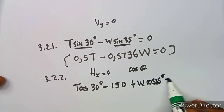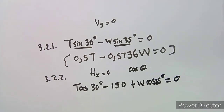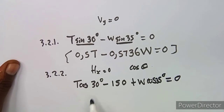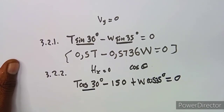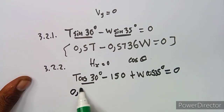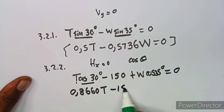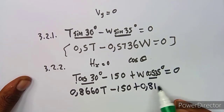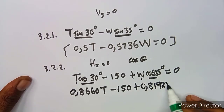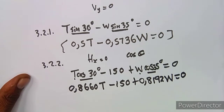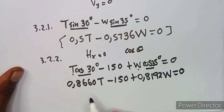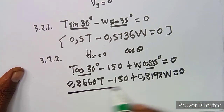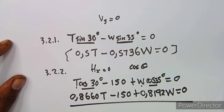Setting the sum of horizontal components equal to zero: T cos 30° − 150 + W cos 35° = 0. Cos 30° is 0.8660, and cos 35° is 0.8192. So: 0.8660T − 150 + 0.8192W = 0. This is equation 3.22. You can leave it like that or transpose the −150 to the other side.